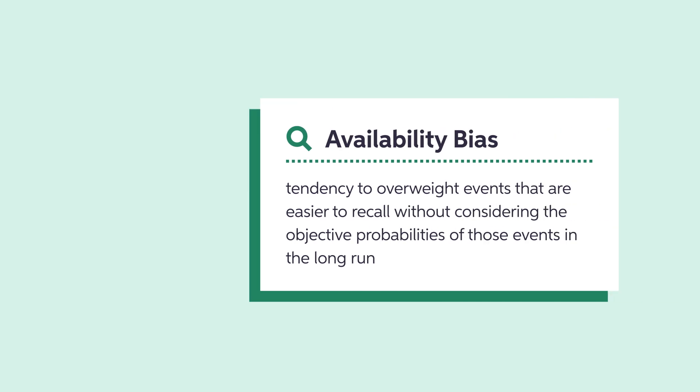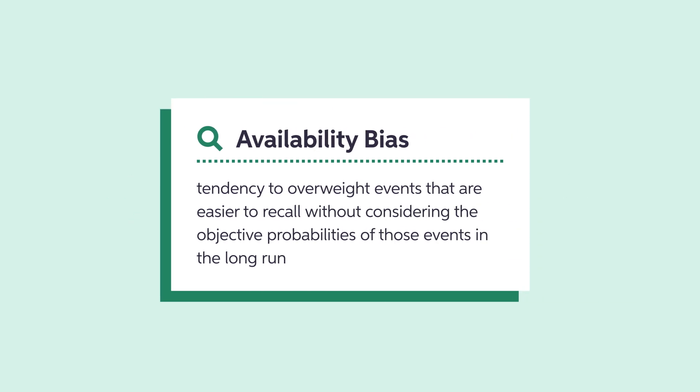Availability bias is another wrinkle in behavioral economics. This refers to the tendency of people to believe that events are more common than they are simply because they are easier to recall. People often overestimate the risk of shark attacks compared to, say, car accidents, because the former is much more memorable.